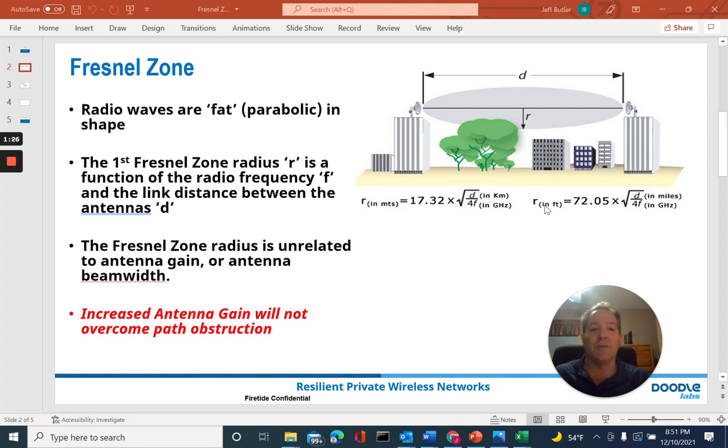A closer inspection of the equation shows us that the frequency of the signal appears in the denominator. Therefore, an increase in f, or increase in frequency, results in a decrease of the size of the radius of the Fresnel Zone. So in essence, a higher frequency signal will have a smaller radius r, or narrower Fresnel Zone. And a lower frequency signal will have a larger radius r, or larger Fresnel Zone.